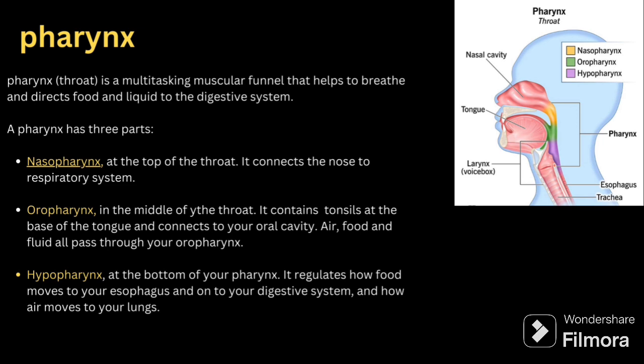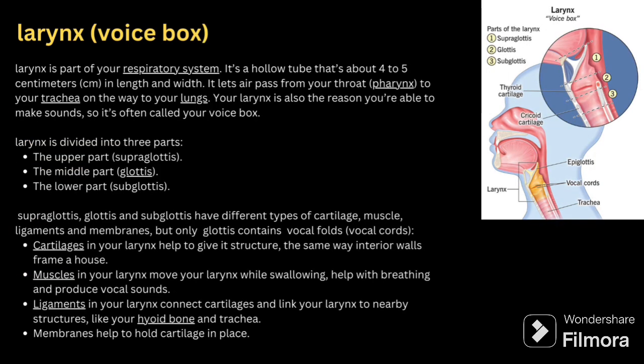Next comes the pharynx, or throat. It is a multitasking muscular funnel that helps to breathe and directs food and liquid to the digestive system. The pharynx has three parts: nasopharynx, oropharynx, and hypopharynx. The nasopharynx is at the top of the throat and connects the nose to the respiratory system. The oropharynx is in the middle of the throat and contains the tonsils and base of the tongue, connecting to the oral cavity — air, food, and fluid pass through it. The hypopharynx is at the bottom, regulating how food moves to the esophagus and how air moves to the lungs.